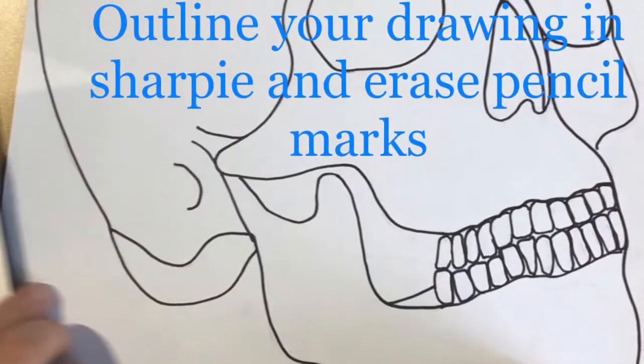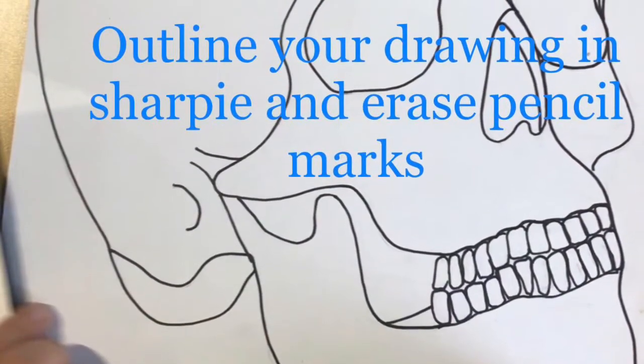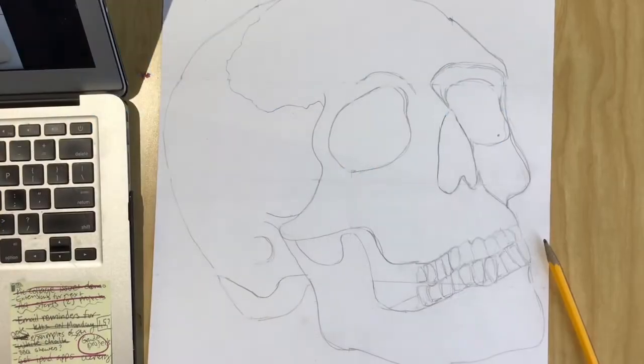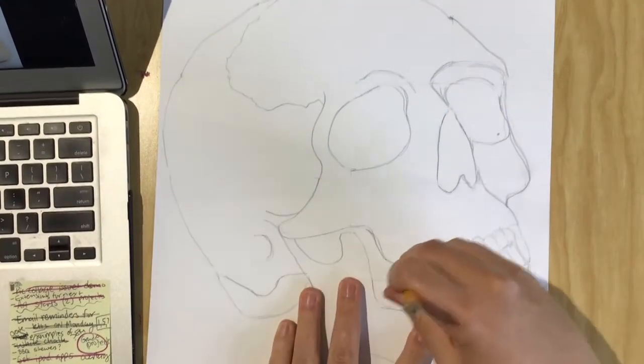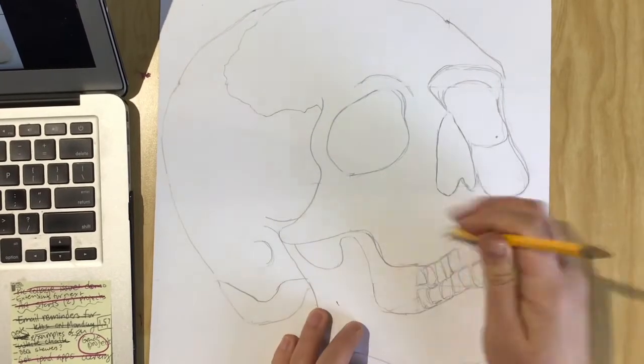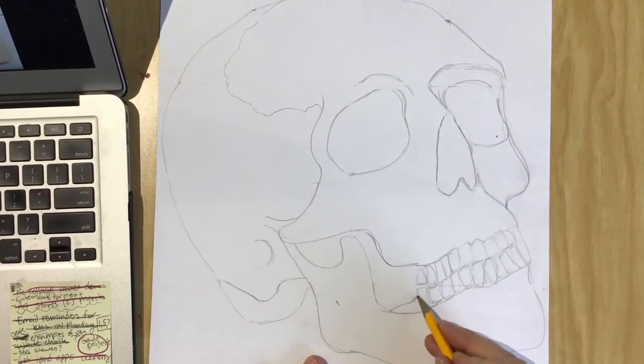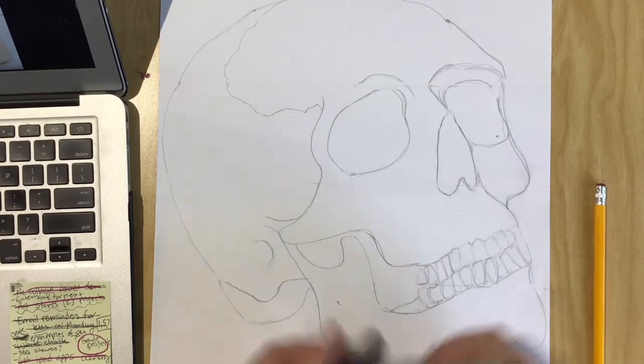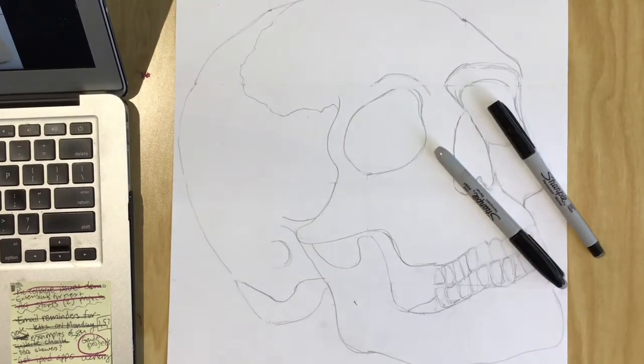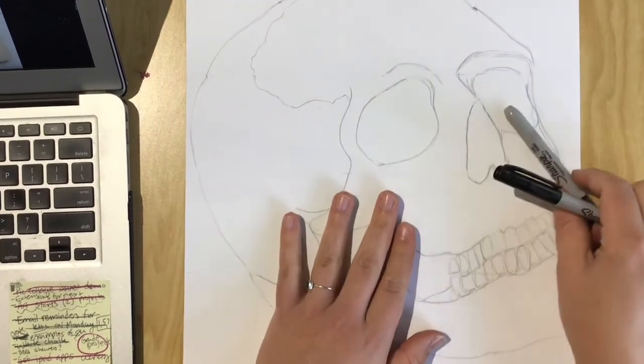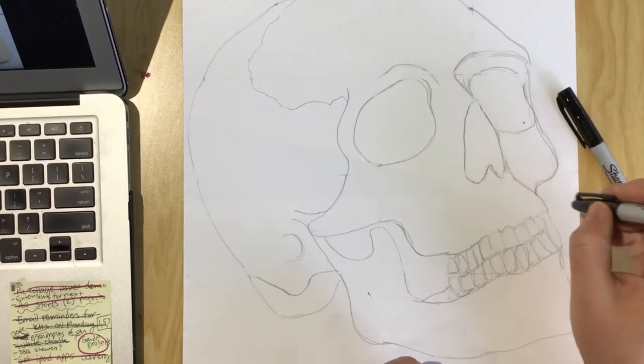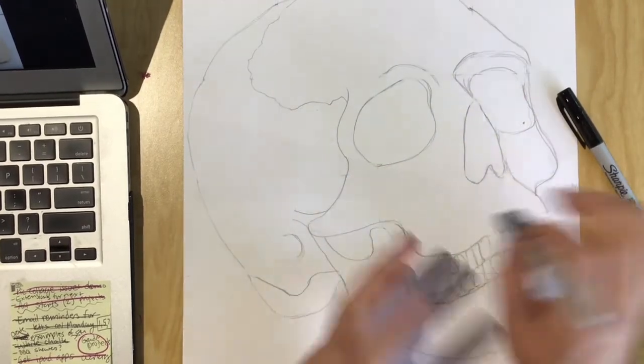Step three is to outline your drawing in Sharpie and erase all your pencil marks. So after your grid is erased and you're happy with your drawing and you believe you've got all of the big details ready, now is time to work with your Sharpies. So you can decide whether to work with your thick or thin Sharpie. I'm going to start with my thicker Sharpie just to outline. It really kind of depends on your drawing.